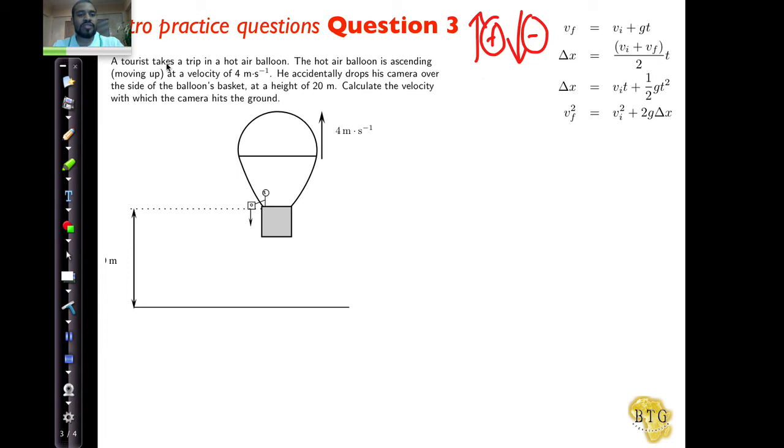Let's read the question. A tourist takes a trip in a hot air balloon. The hot air balloon is ascending at a velocity of four meters per second. He accidentally drops his camera over the side at a height of twenty meters. Calculate the velocity with which the camera hits the ground.